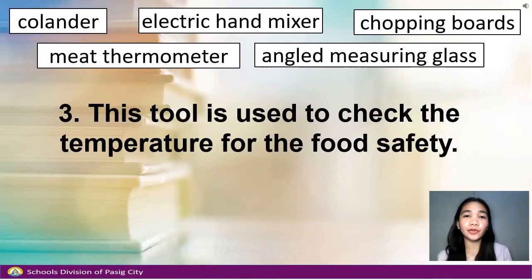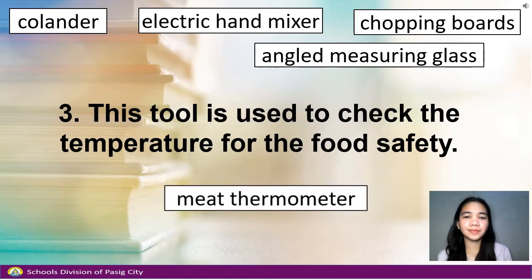Number 3. This tool is used to check the temperature for food safety. Answer: Meat thermometer.